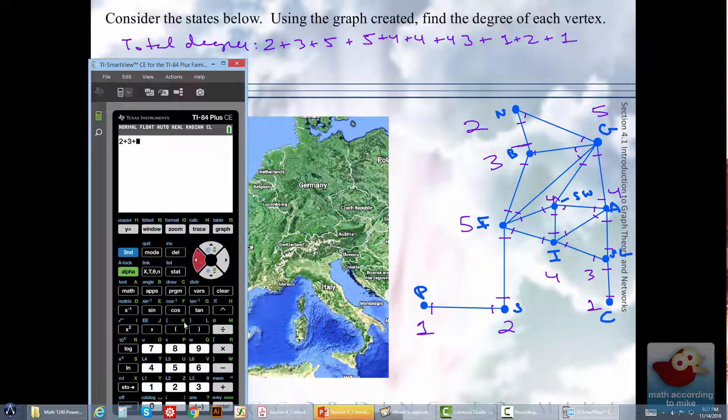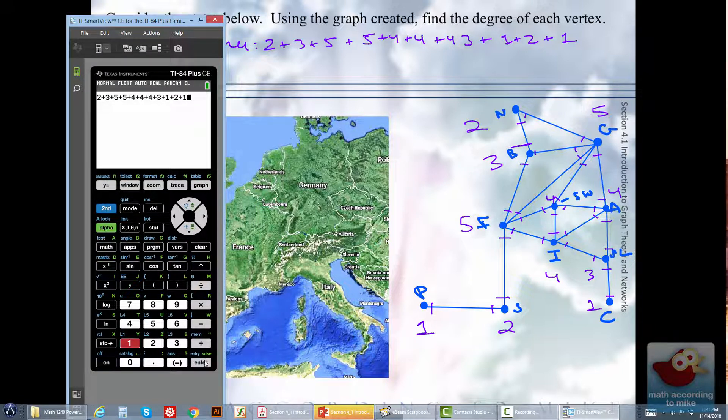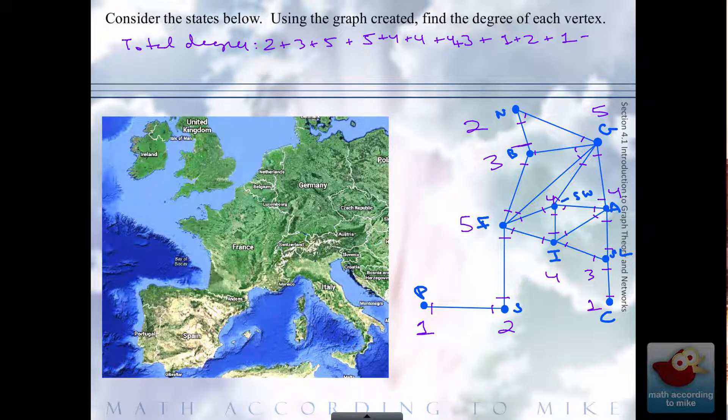Two plus... now I typed in a four, okay, then five, another couple fours here, now that's a one. Oh my gosh, oh that says 43, I need to put a plus sign in there. All right, let me just add: two, three, five, five, four, four, four, three, one, two, one. That's good, hit enter. Much better this time. So we got a total degree of 34.